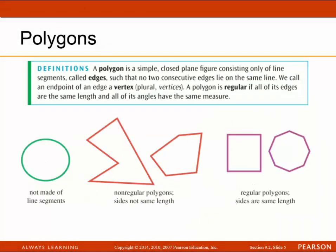The next thing we're going to define are polygons. A polygon is a simple closed plane figure consisting only of line segments, and these line segments are called edges. No two consecutive edges lie on the same line. We call the endpoint of an edge a vertex, and the plural is vertices. A polygon is regular if all of its edges are the same length and all of its angles have the same measure.